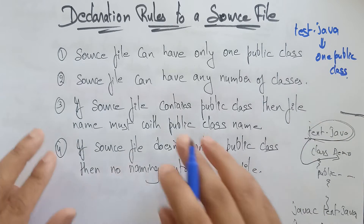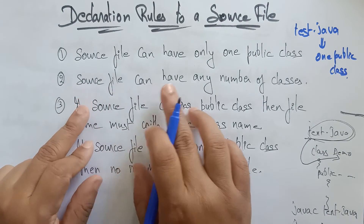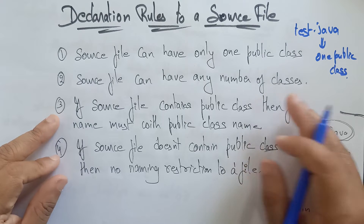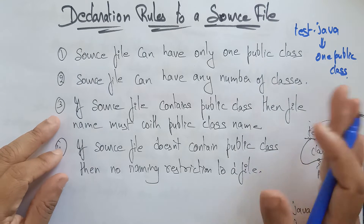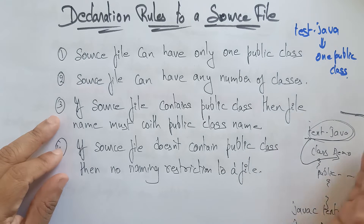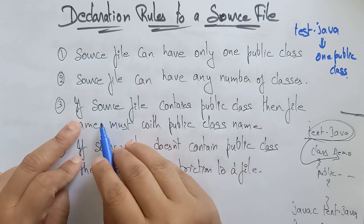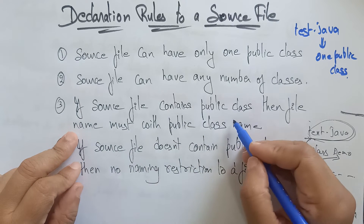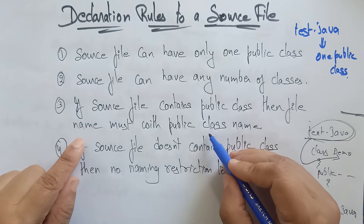The second rule: a source file can have any number of classes. You can write any number of classes — no problem with that. And the third point: if the source file contains a public class, then the file name must match the public class name only.